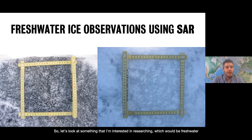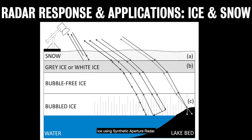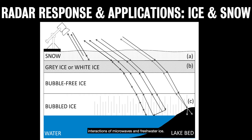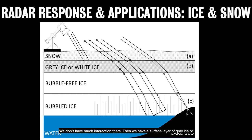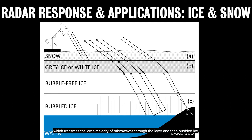Let's look at something I'm interested in researching — freshwater ice using synthetic aperture radar. This is my $20 slide showing the interactions of microwaves and freshwater ice. We have snow overlying the ice, which is generally a transmission of microwaves with not much interaction. Then a surface layer of gray ice or white ice where microwaves interact with spherical bubbles within the ice. Then a bubble-free ice layer which transmits the large majority of microwaves through, and then bubbled ice which produces high backscatter.